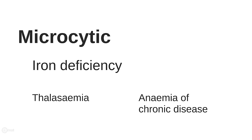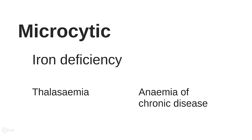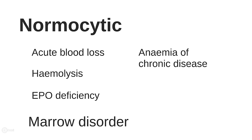Amongst the causes of microcytic anemia are iron deficiency, which is the most common, thalassemia, and anemia of chronic disease, which can have a low or a normal MCV. Anemia with a normal MCV is normocytic anemia.